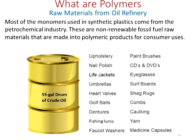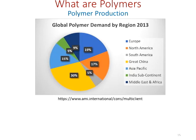Let's take a look at polymer production. A chart from 2013 shows the distribution by region, and the distribution has been relatively consistent. These are the marketing regions that most people look at when analyzing markets for plastics.